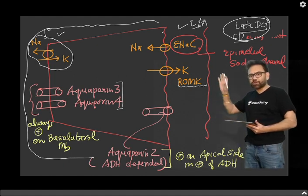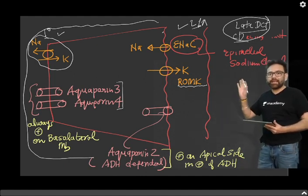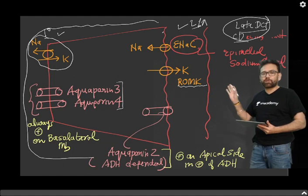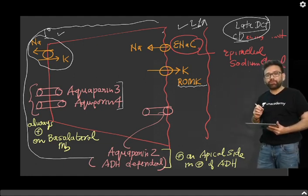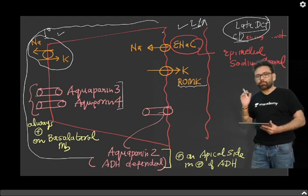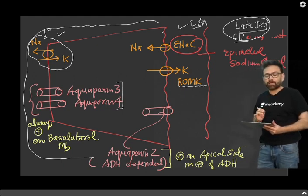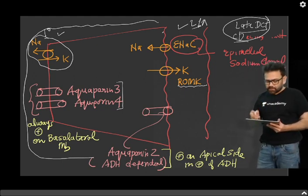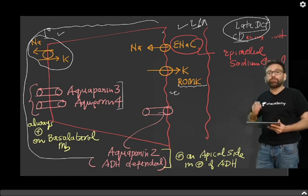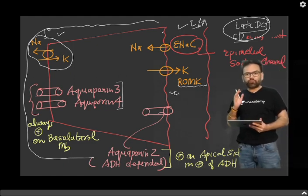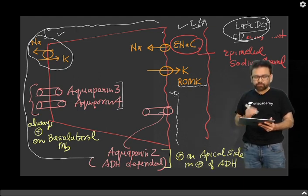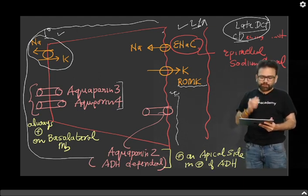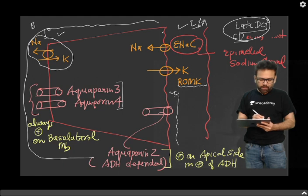Only when we know the whole structure of the collecting duct and late distal convoluted tubule, and how Liddle syndrome is going to act upon it, can we understand the clinical part. First of all, there are two sides. The side on the lumen is called the luminal side or apical side. And the other side is called the basolateral side of the cell.